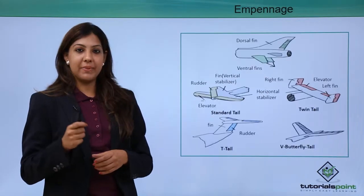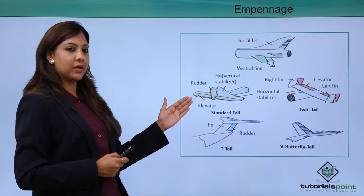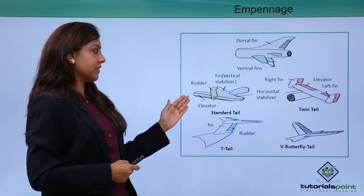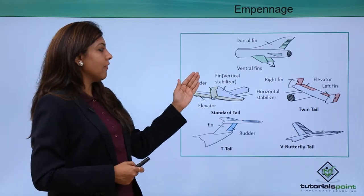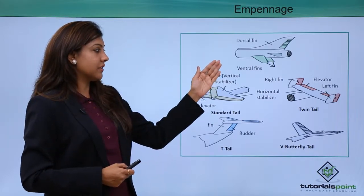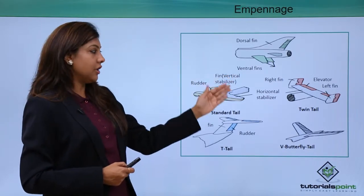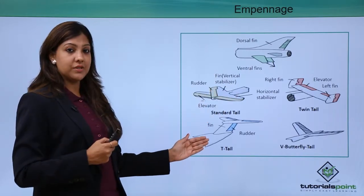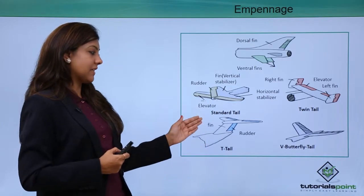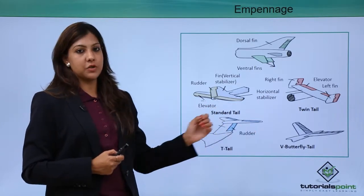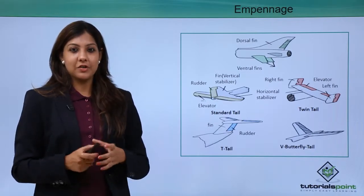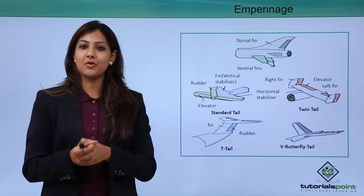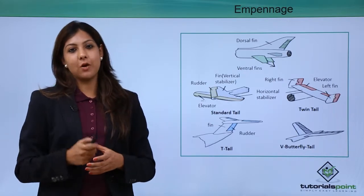Let's talk about the empennage in a little more detail. As you can see on the slide, we have the elevator and rudders, the vertical and horizontal stabilizer, the left fin and right fin, and a twin tail. We also have the T-tail, which is the main part, along with rudders and fin, and the V-butterfly tail. These differ from aircraft to aircraft depending on the make — whether it is Boeing or Airbus.